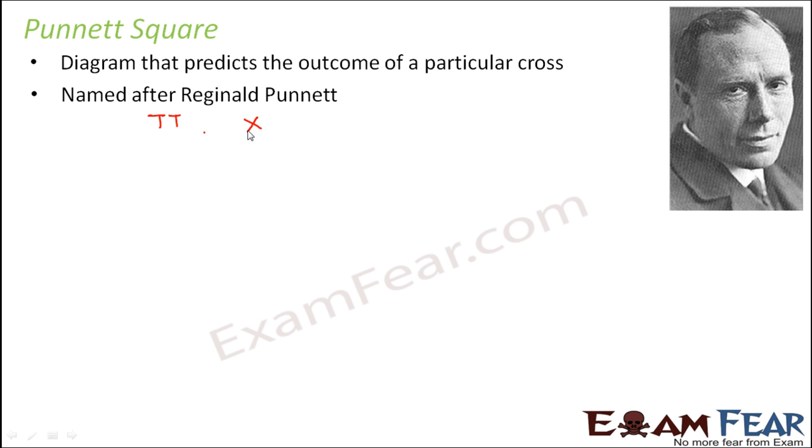So what was done: homozygous tall was crossed with homozygous dwarf. So what were the gametes that can be produced from this? Capital T is the only option, and here you can produce these two gametes, small t and small t. So that is the only option that can be produced. So these are the gametes.